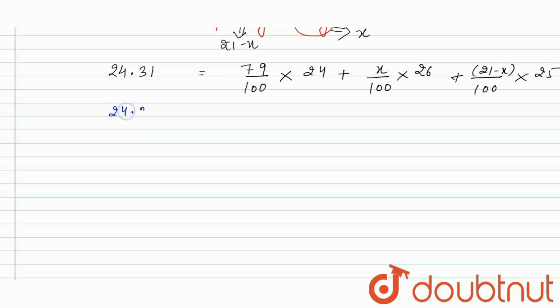it will be 24.31 is equal to, here it will be 79 into 24 plus 26x plus 525 minus 25x.